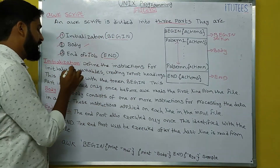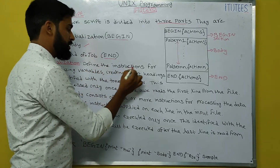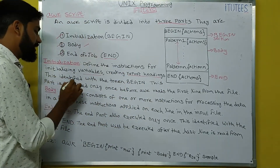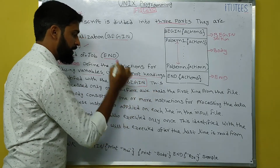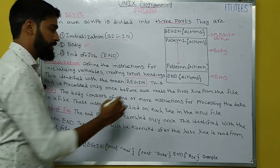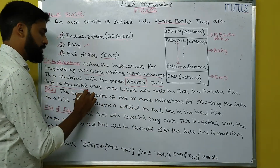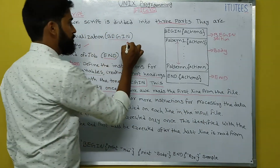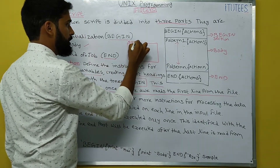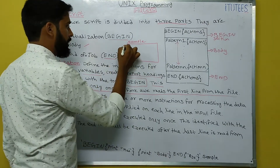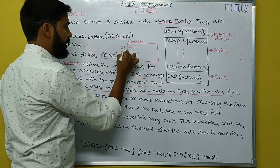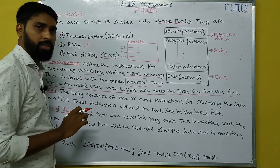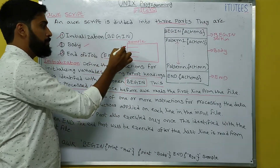The BEGIN part is called initialization — it defines instructions for initializing variables and creating report headings. It is identified with the token BEGIN. This part is processed only once before AWK reads the first line from the file. For example, if the sample file contains three lines, the actions written in the BEGIN section are executed before reading line one.